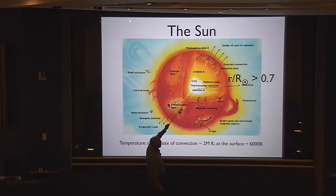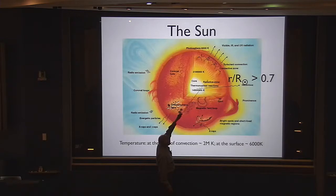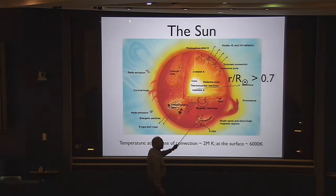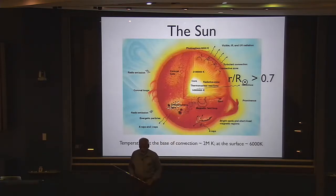As the energy travels outwards, you have a region where the thermal energy is being conveyed outwards through radiation. At some point, as the radius becomes larger, the temperature drops and not all the gas is ionized, so radiation becomes inefficient.